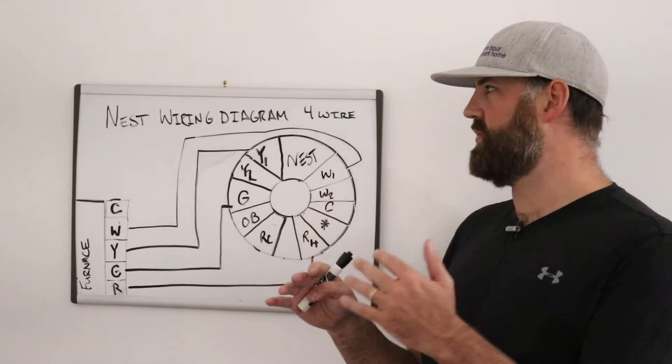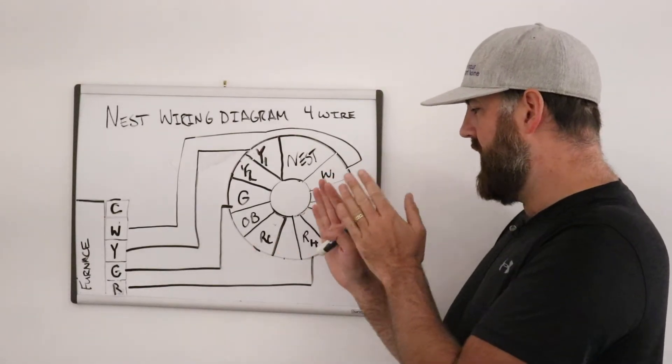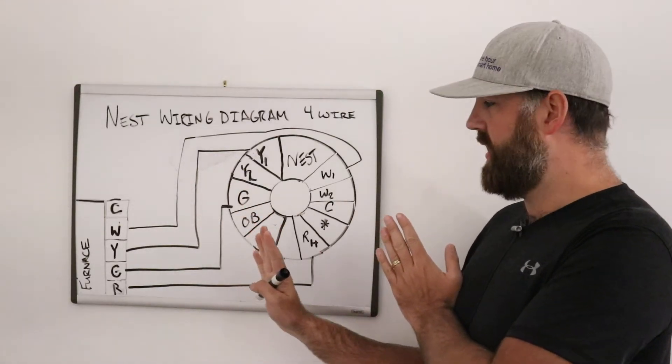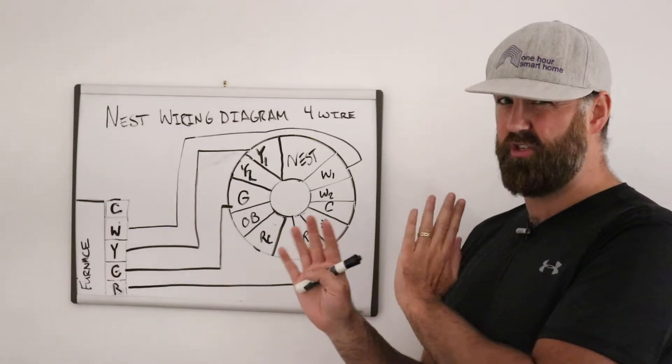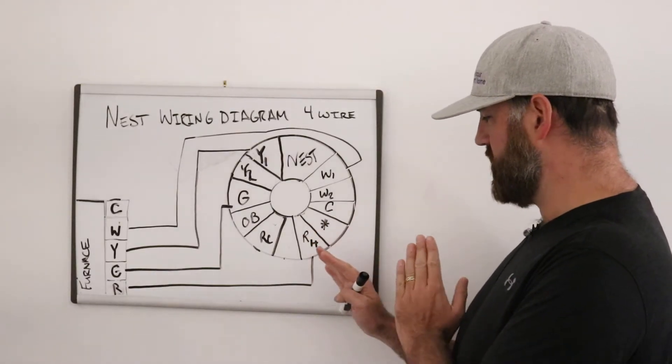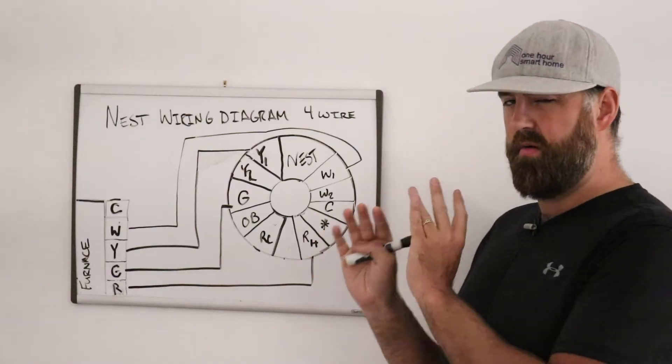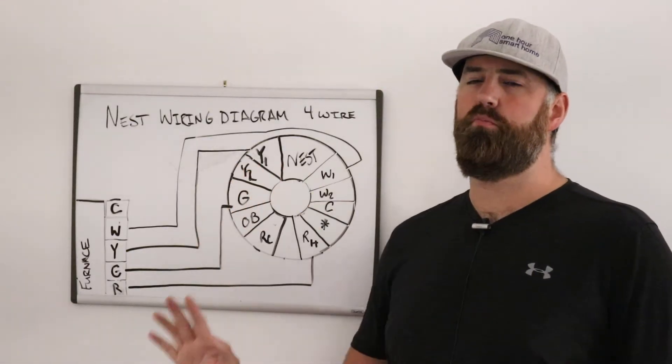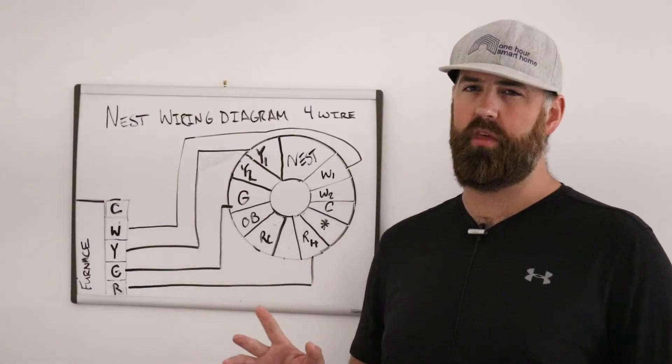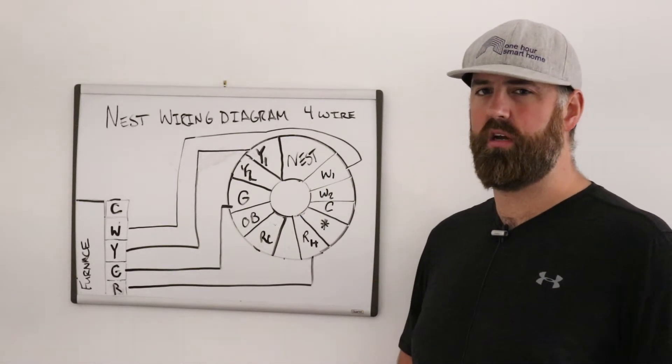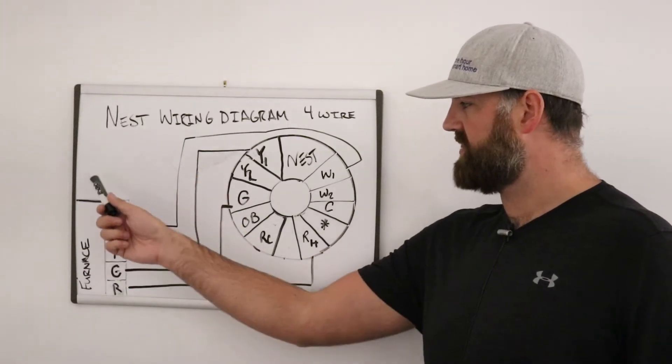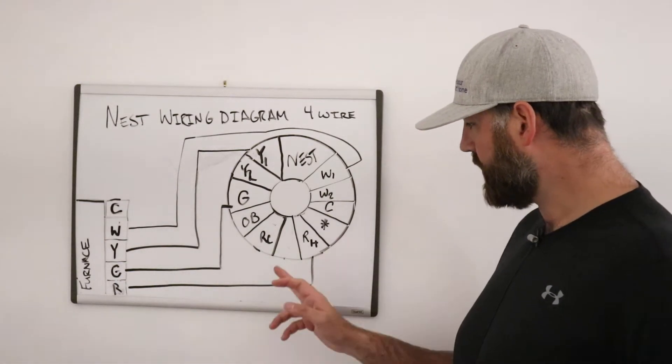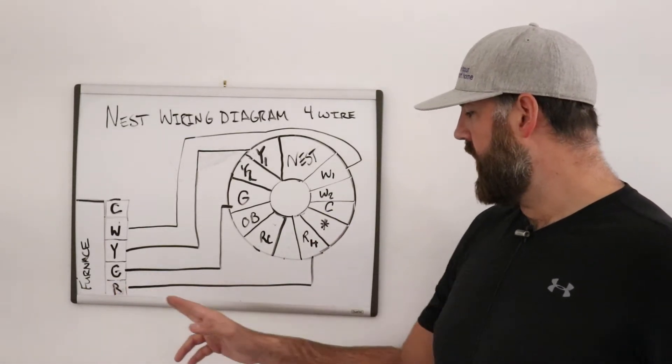So R, either RC or RH is just an input for power. That's what powers the nest. That is what goes through the nest and then provides a signal back down to the furnace. And it is designed in such a way that you could use RC for power from a separate cooling system, if it wasn't connected to your furnace and HVAC system, which is very rare, and you could have another power to your RH terminal from the heating system, which would be separate from your AC system. But these are both very rare occurrences. So RH is the power. We're going to have the R wire going from R to RH.